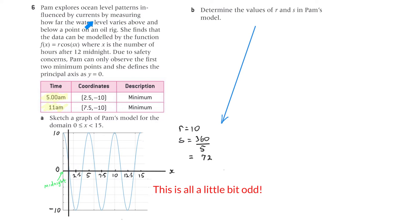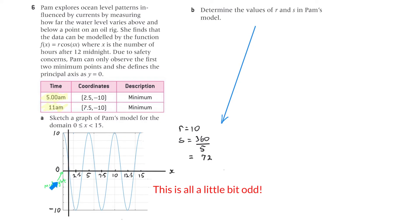Pam explores ocean level patterns influenced by currents by measuring how far the water level varies above and below a point on an oil rig. She finds the data can be modelled by a function where x is the number of hours after 12 midnight. Pam can only observe the first two minimum points, and she defines the principal axis as y equals 0. The coordinates are 2.5 and minus 10, but since x is the number of hours after midnight, the label should say 2.30 a.m. — it's a bit confusing.